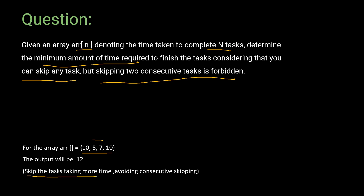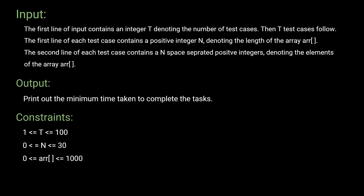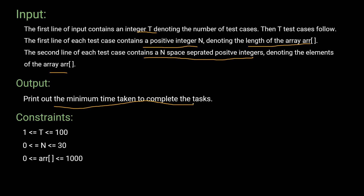The approach is to skip tasks that take more time while avoiding consecutive skipping. For the input format: the first line contains integer t denoting the number of test cases. For each test case, the first line contains n, the length of array ARR, and the second line contains n space-separated positive integers. The output is the minimum time taken to complete the tasks.